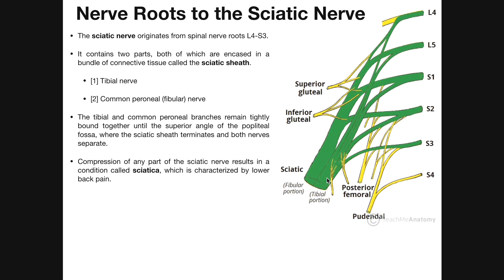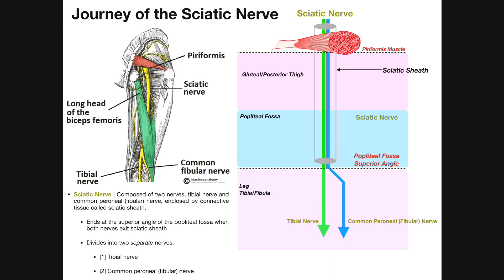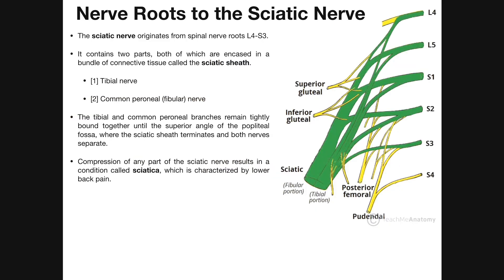The sciatic nerve is not only one of the most important, but it is very, very large — a very thick nerve. When you're looking at this on a cadaver or just an image, one of the dead giveaways that you've got the sciatic nerve is that you're in the leg or gluteal region and you've got this really big, thick nerve. We're going to talk about how it originates from spinal nerve roots, how it branches, and then discuss a couple of conditions caused by irritation of the sciatic nerve.